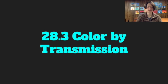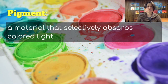Color by transmission. When we're talking about color by transmission, we tend to use pigments for color. This is a material that selectively absorbs colored light. So when you're painting, you're using pigments, and we can also put pigments in glass and get stained glass or colored glass.